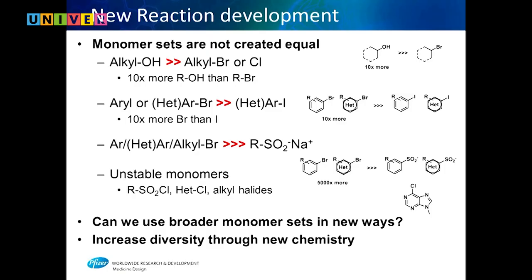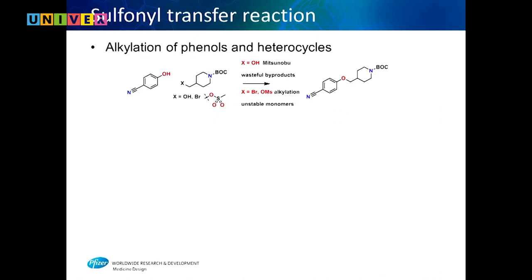Can we use the large monomer sets instead of the small ones — do the same reactions with broader availability? That's what we're trying to do by increasing diversity using new chemistry. What can we develop that will allow us to use broader monomer sets? This is where I'll start talking about some new chemistry.